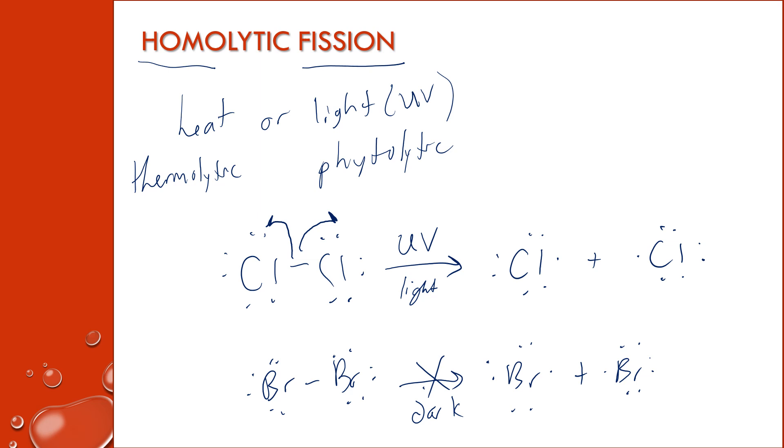Another way that you can write this out as a chemical equation is instead of drawing the Lewis structures, you would have the Cl2 in UV or light forming two chloride radicals. Or Br2 in UV, you'd get two bromine radicals.